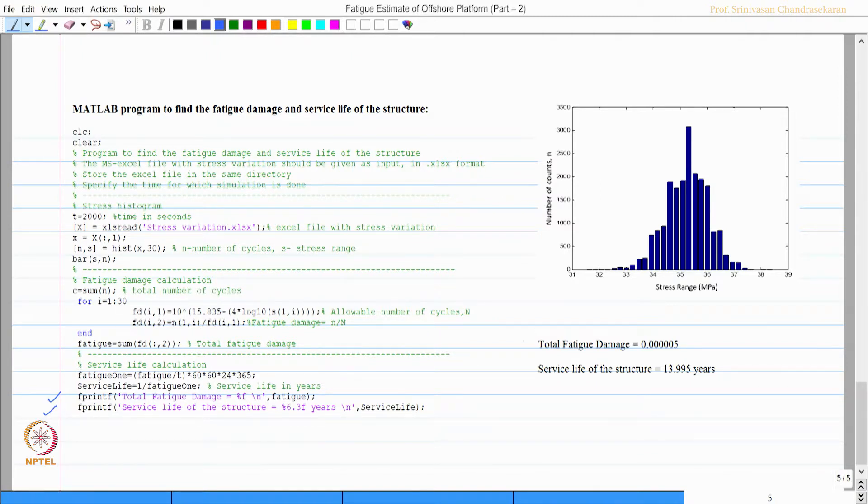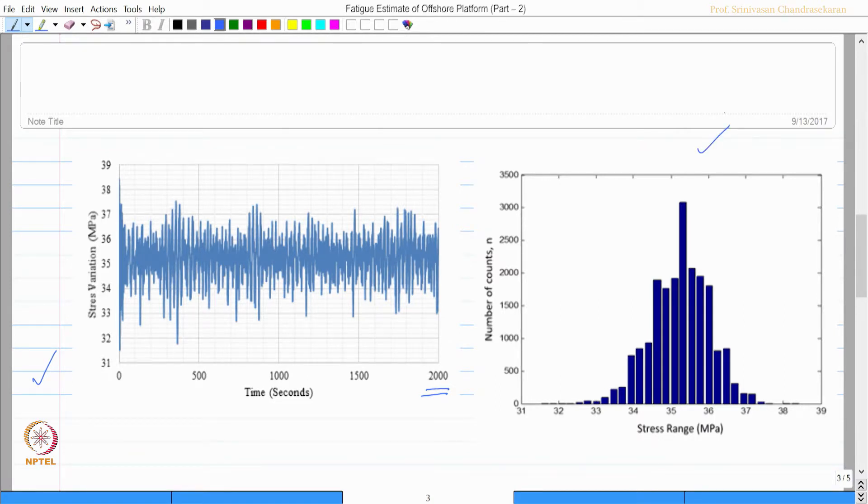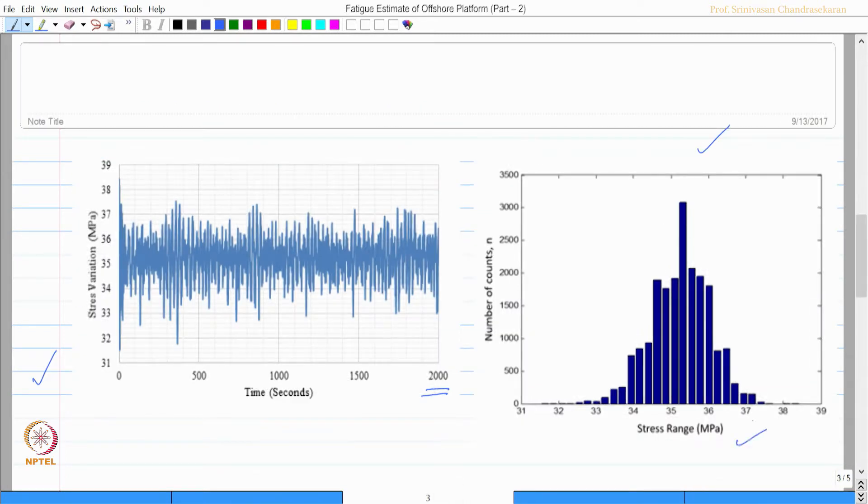The total fatigue damage is value given on the screen and the output of the program is done now and the service life is estimated as 13.925 years which is from the computer program whereas, you can see the stress bin which is plotted in the screen now at this moment which was done by manual calculation. You can see the stress bin plotted which is an output from the computer program and this figure as well as output what we have here are exactly same.